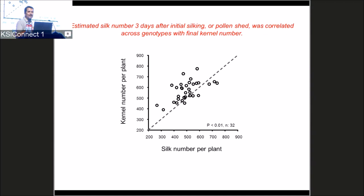We did this for all 32 genotypes under two growth environments, placing the three-day window from first pollination to three days after. The relationship between silk number at that specific time window and kernel number per plant at maturity was not bad — though I admit I expected it to be a little better. Traditionally, crop physiologists have related kernel number to ear biomass growth; here we are linking how many silks came out at a specific developmental time point.